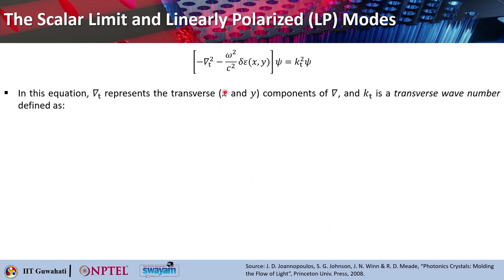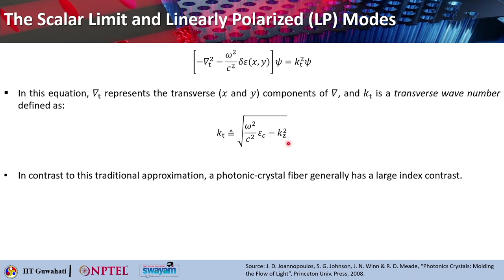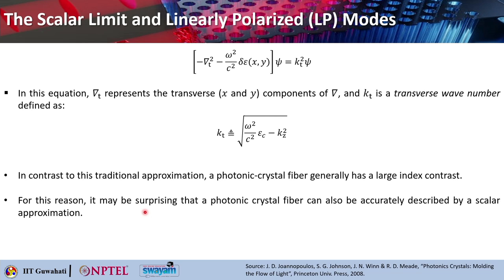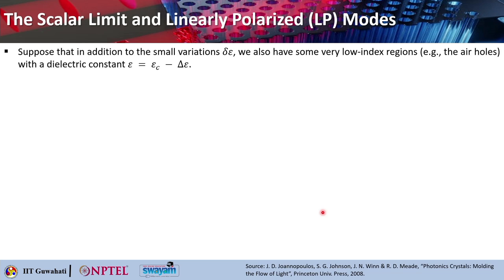If we neglect terms of order grad(delta_epsilon), Maxwell's equation for the electric field takes a familiar form where the different components of electric field are decoupled from one another, though not completely independent because of the transversality constraint del·(epsilon·E) = 0. This constraint allows Ez to be determined from Ex and Ey. Combining these results with Bloch's theorem, we can write the transverse xy components of the electric field as E_t = (Px·x̂ + Py·ŷ)·ψ(x,y)·e^(ikz·z), where Px and Py are constants specifying the amplitude and direction of polarization, and ψ satisfies an eigenmode equation reminiscent of the Schrödinger equation in quantum mechanics.